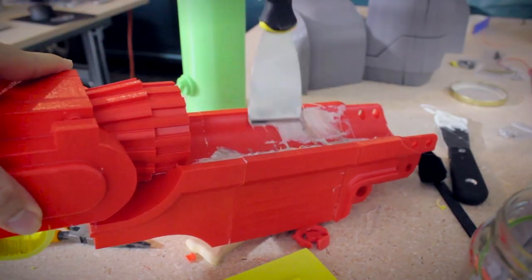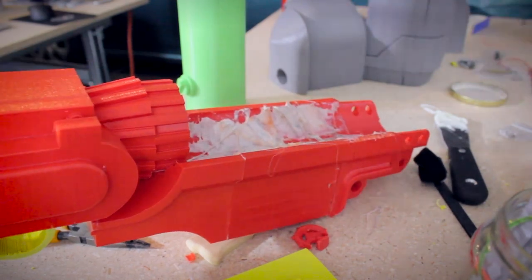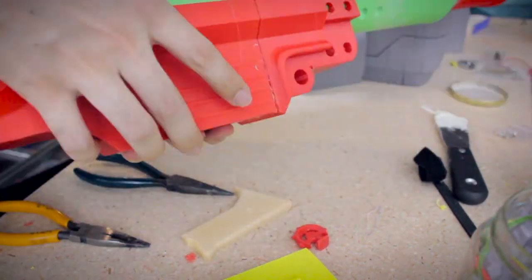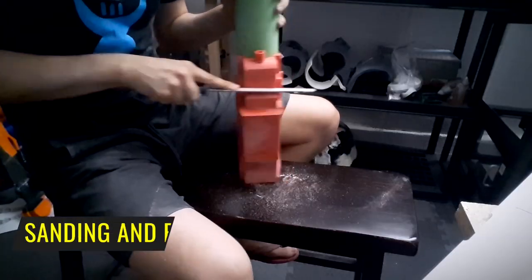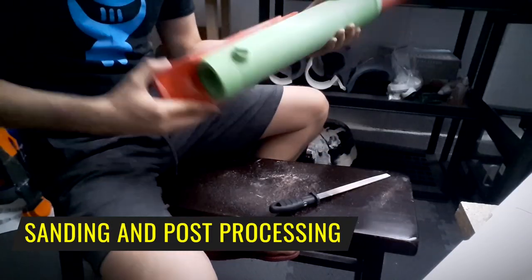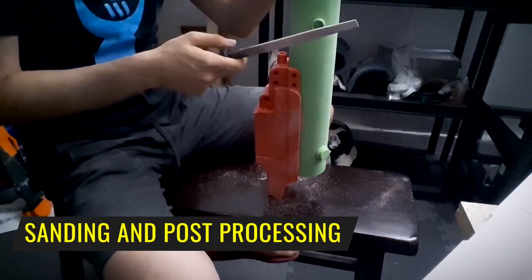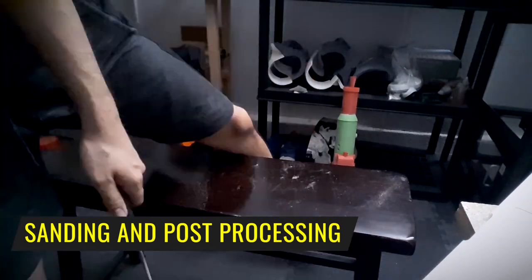While ABS cement is a bit messy, it is fortunate that the excess can be removed with light sanding and side cutters. Unlike other common 3D printable plastics, like PLA, ABS is remarkably soft and easy to sand.